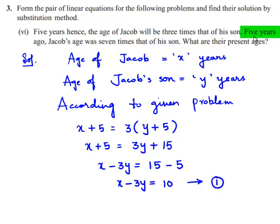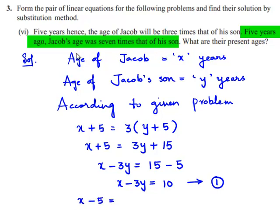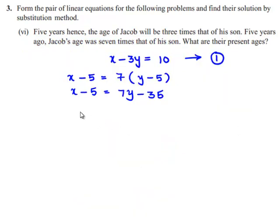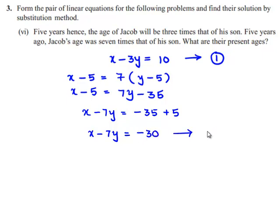According to the second condition, 5 years ago Jacob's age was 7 times that of his son. So we can write x minus 5 = 7 multiplied by y minus 5, which is 7y minus 35. So x minus 7y is equal to minus 35 plus 5, which is minus 30. This is equation number 2.